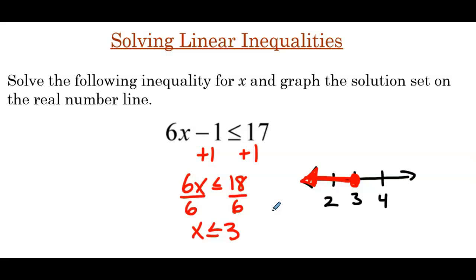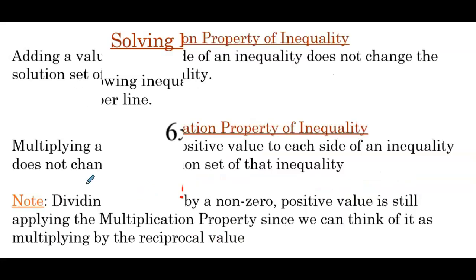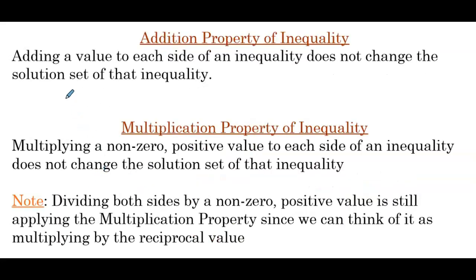The other piece we have to discuss is what allows us to add 1 or divide by 6 on both sides of an inequality without changing the solution set. This leads us to the addition property of inequality — adding a value to each side does not change the solution set — and the multiplication property of inequality, where multiplying a non-zero positive value to each side does not change the solution set. Dividing by a non-zero positive value still applies the multiplication property, since division is multiplication by a reciprocal.